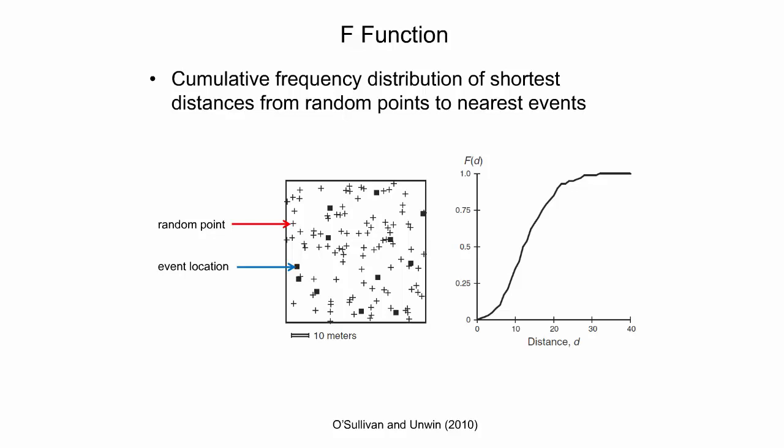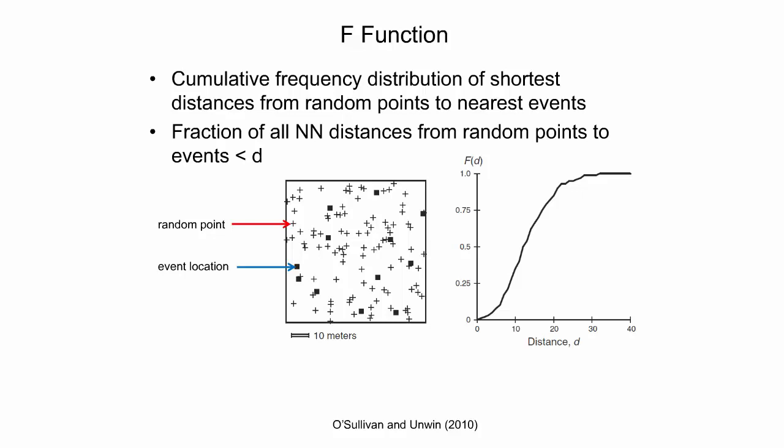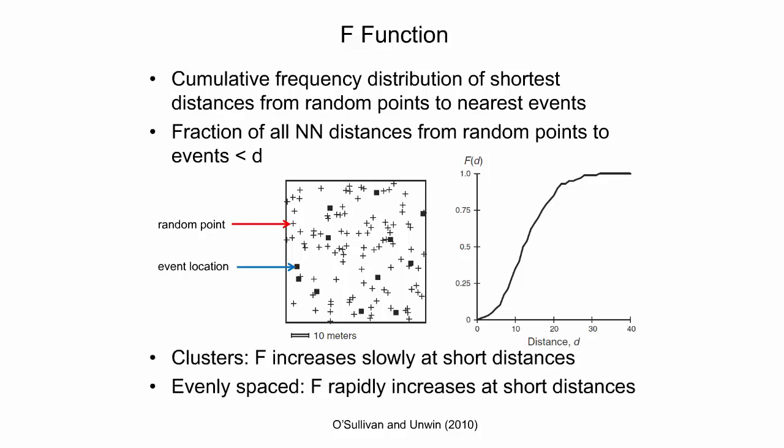The f-function is closely related to the g-function, but instead of accumulating the fraction of nearest-neighbor distances between events, random points are first placed in the study region. Then the cumulative frequency distribution of shortest distances from these random points to the nearest event is determined. Therefore, the f-function expresses what portion of the generated random points are within distance d from their nearest event. One advantage of the f-function over the g-function is that we can increase the sample size of random points to get a smoother cumulative frequency curve. If events are clustered, the f-function will rise slowly at first but more rapidly at longer distances, because a good portion of the study area is fairly empty, and many random point locations are at longer distances from the nearest event.